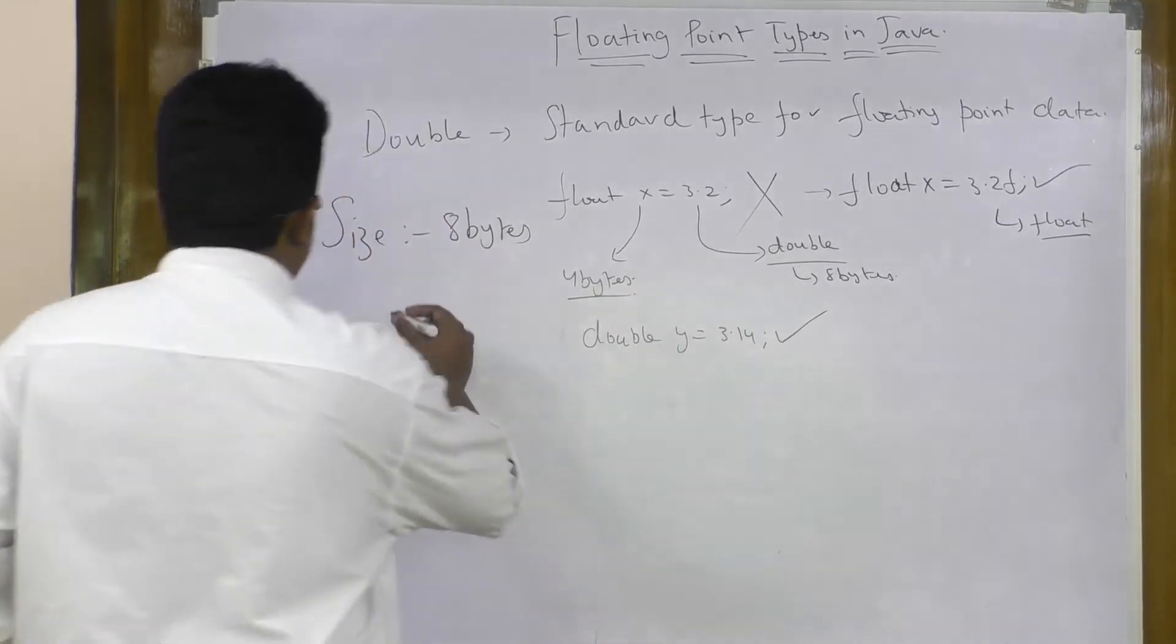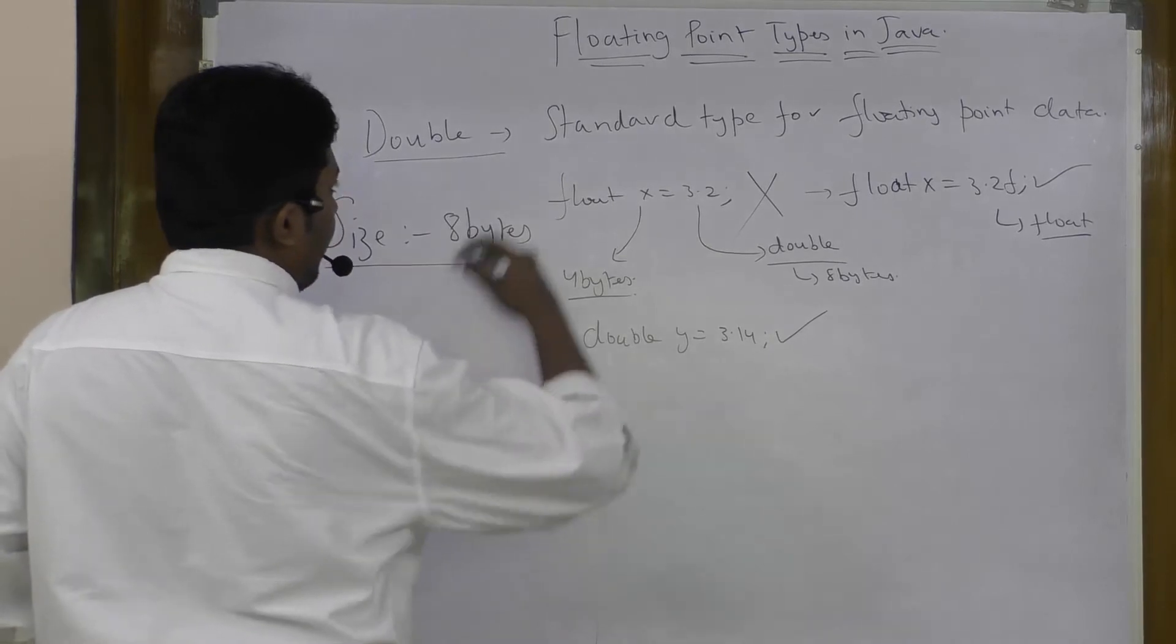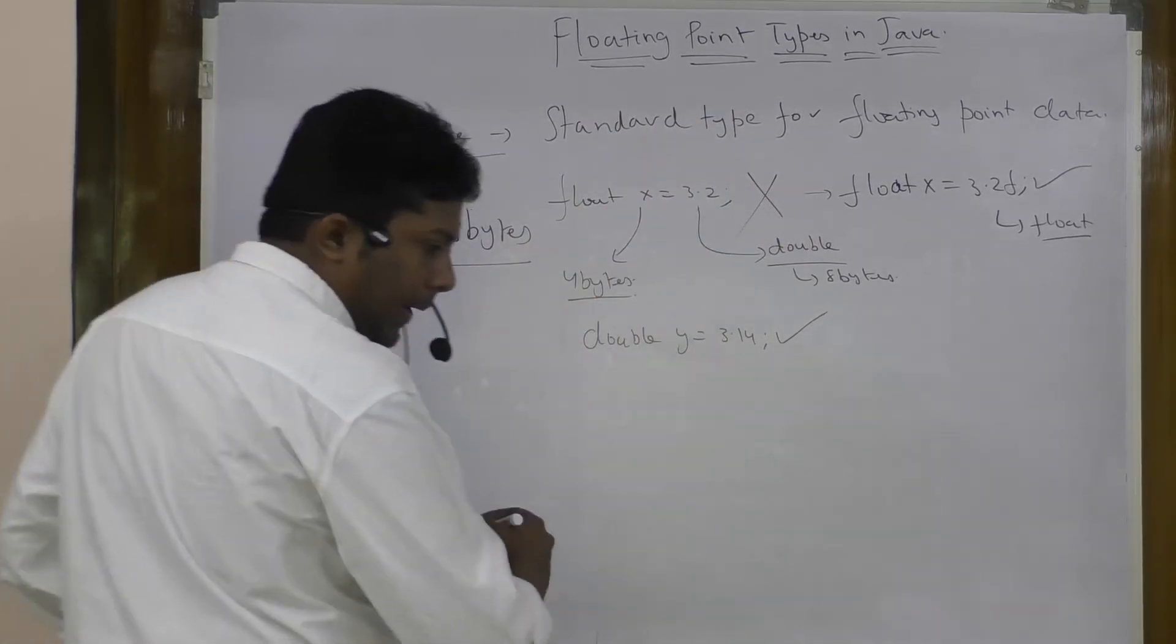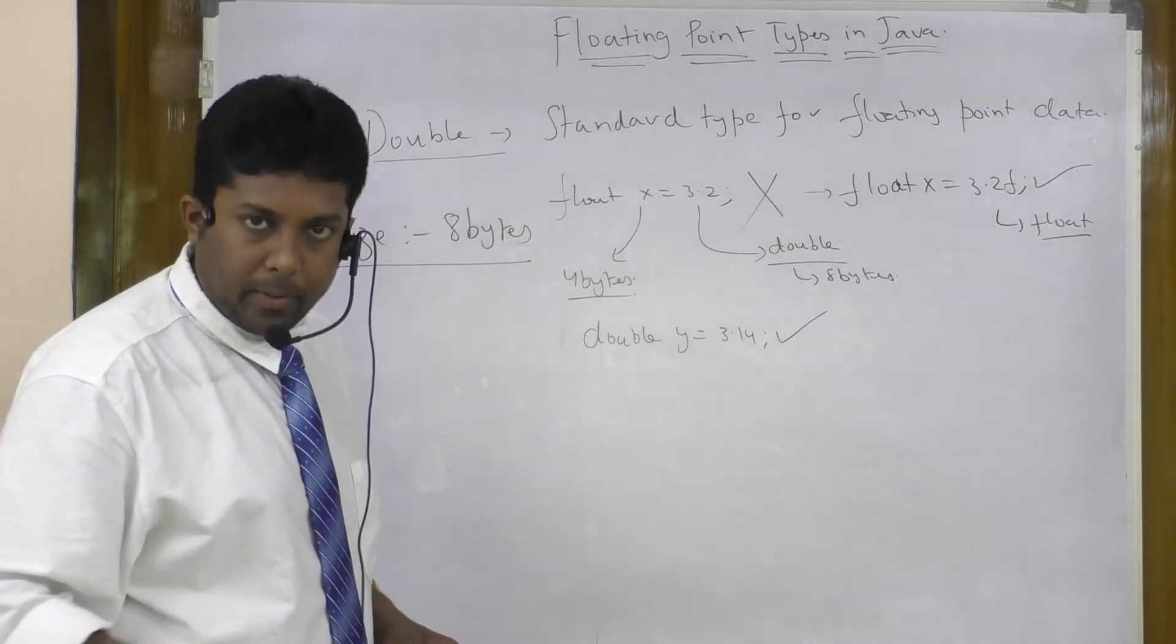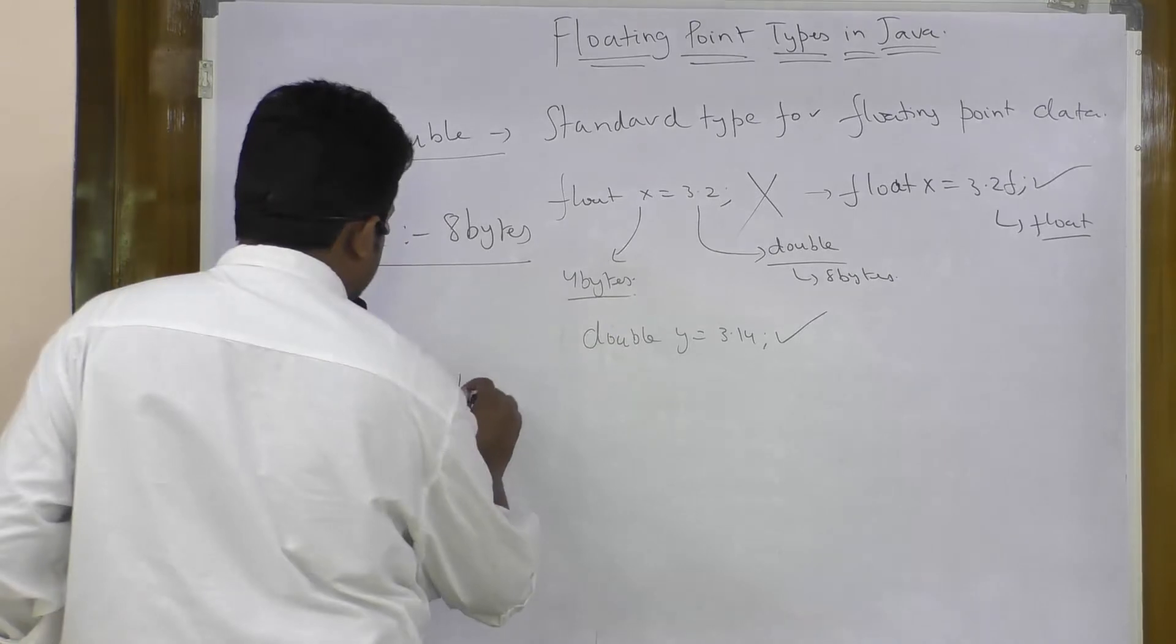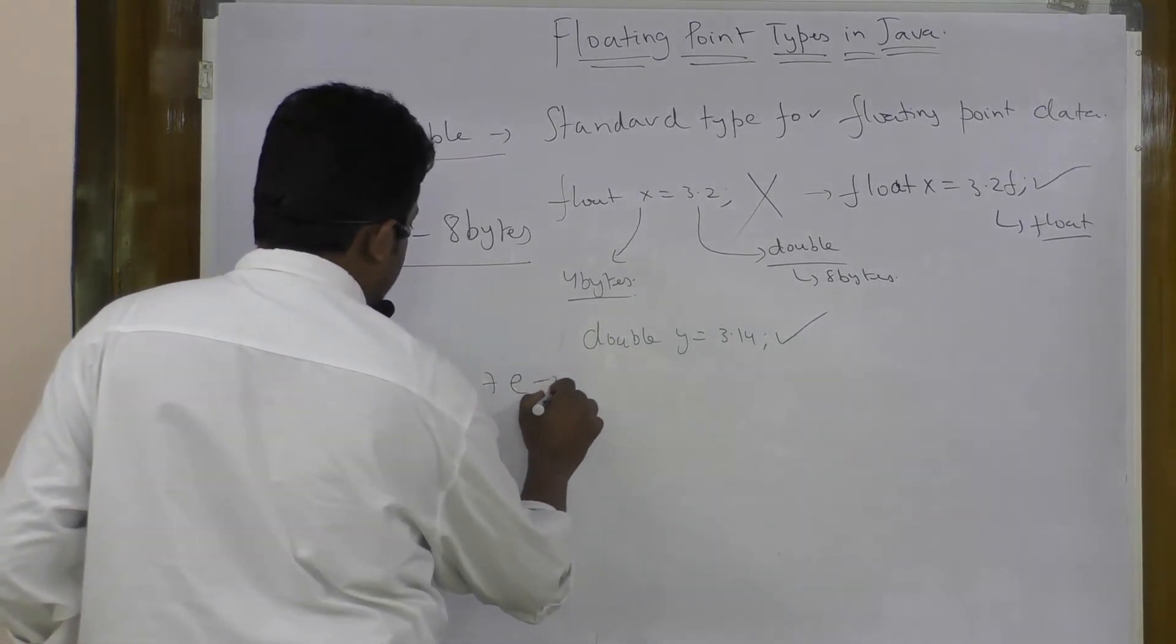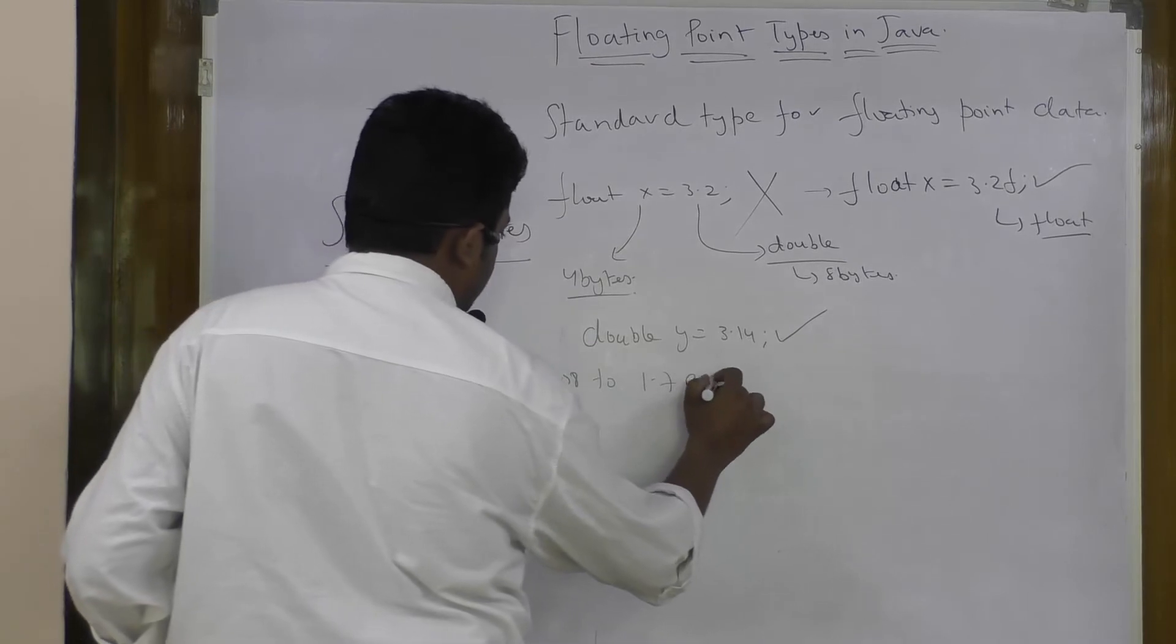As we said that the size is 8 bytes, double is the standard type, and all the floating point constants in Java are of type double by default. Next, coming to the range of double is 1.7e-308 to 1.7e+308.